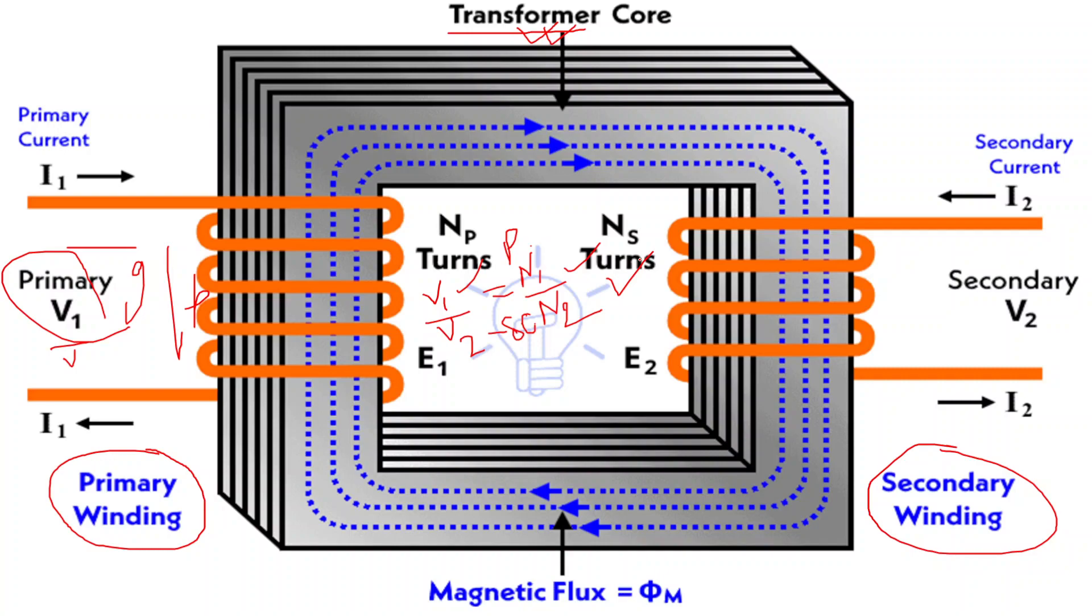Third one is the isolation transformer. An isolation transformer provides electrical isolation between the primary and secondary circuits, preventing the direct transfer of electrical potential and enhancing safety.